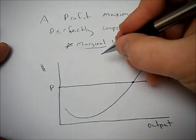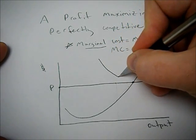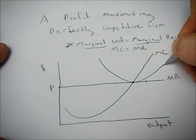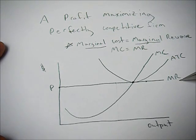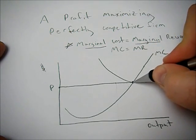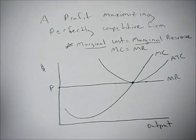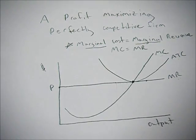So in long run equilibrium, the minimum of our average total cost is going to occur where marginal cost equals marginal revenue. So at this point, ATC equals MC equals MR. We're right here. Everything's good. Long run equilibrium, no economic profit, no economic loss. Let's look at another example.